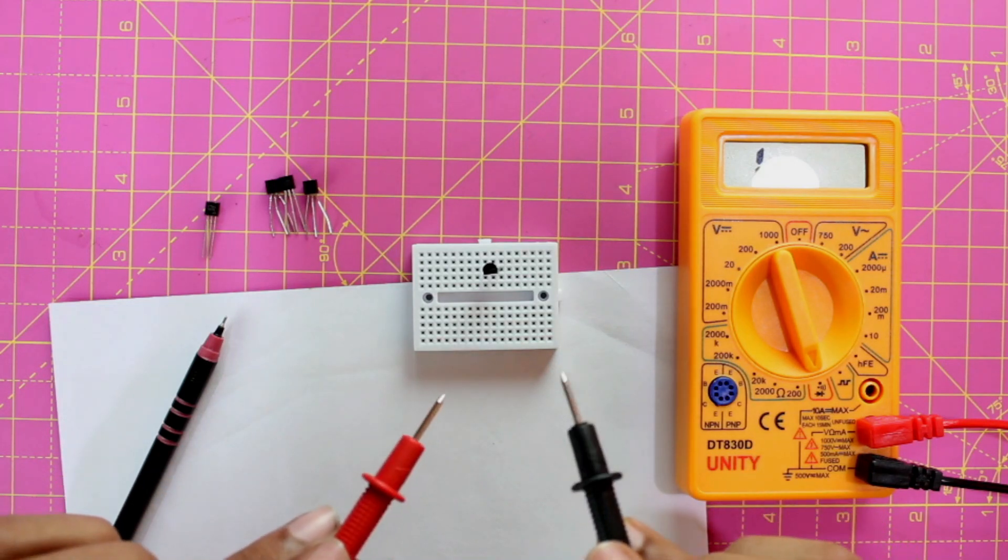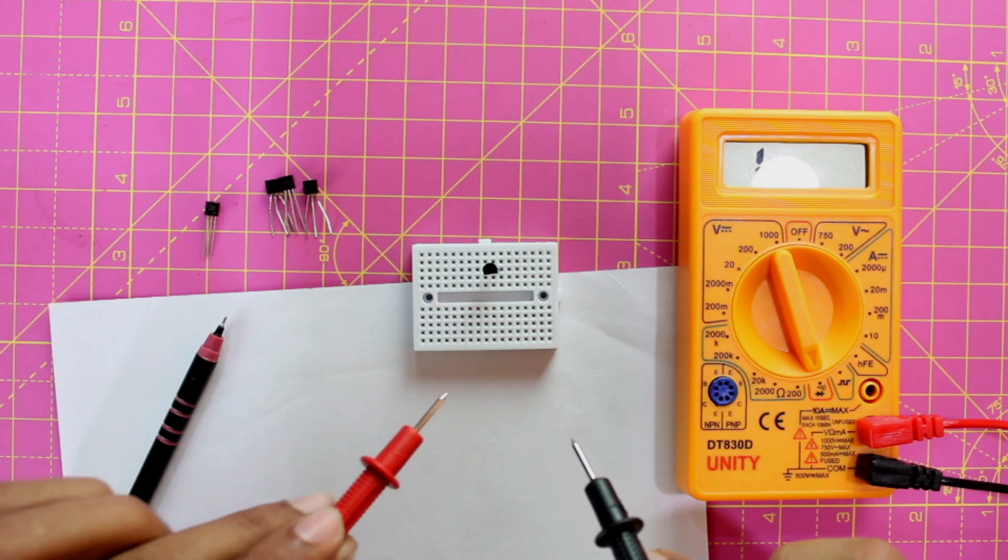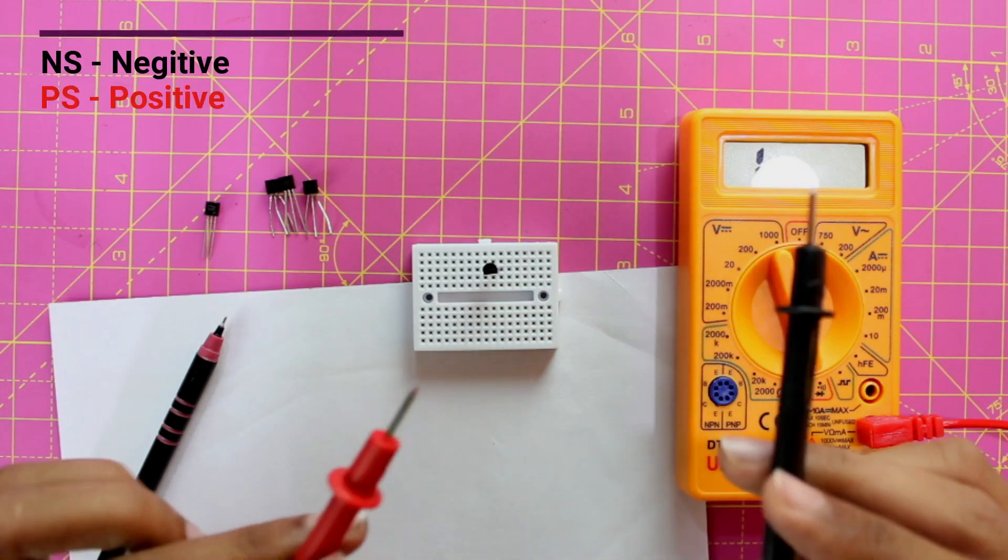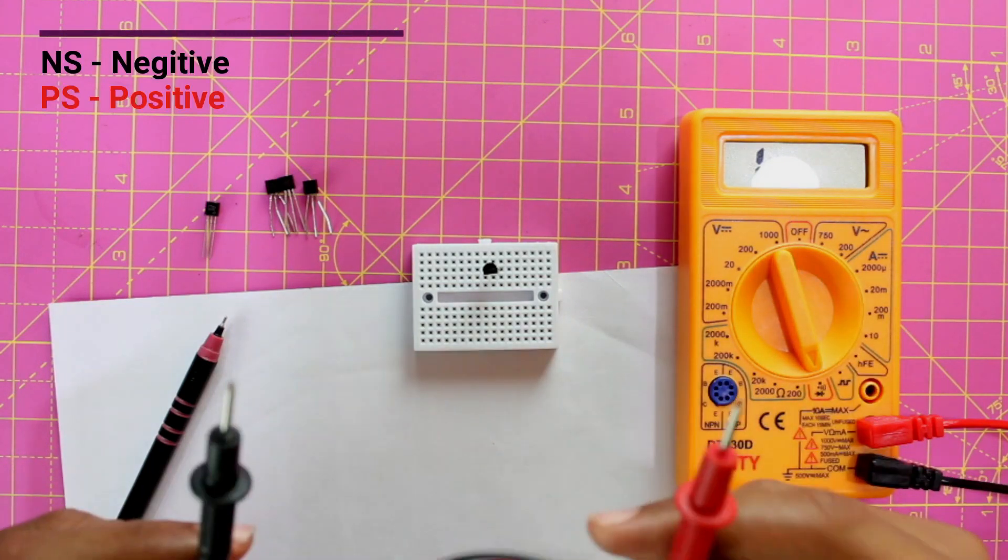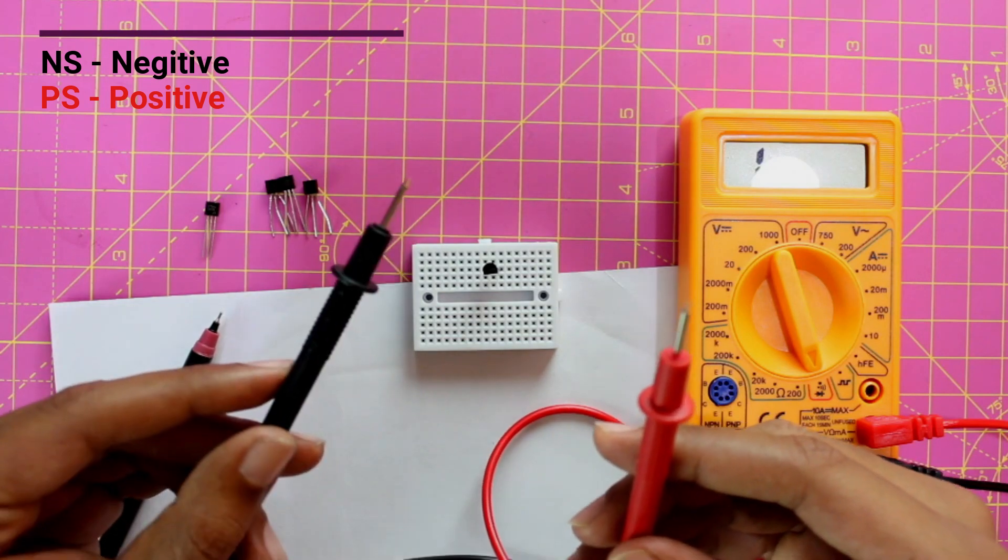Now just for the sake of understanding, I am going to refer N as negative and P as positive. So as we know, positive is red and negative is black.